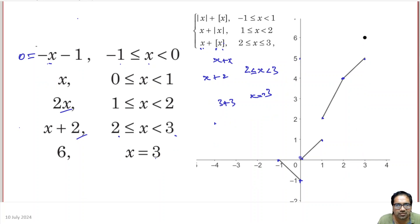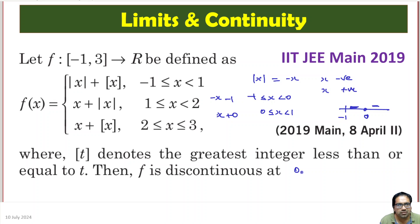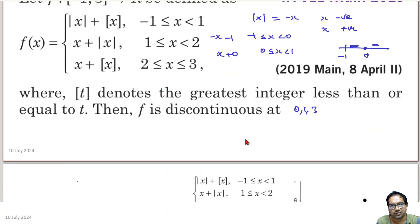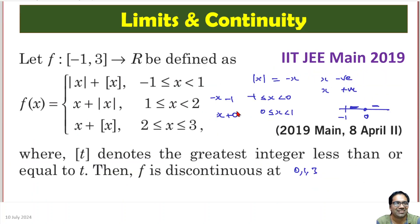Now we can see clearly where the discontinuities are. At x = 0, there is clearly a discontinuity. At x = 1, there is also a discontinuity. At x = 3, there is a discontinuity too. At x = 2, it is NOT discontinuous because the left side and right side both approach 4. So f is discontinuous at 0, 1, and 3. Simple problem — we just need to apply the basic rules of absolute value function and greatest integer function, and see where the function is discontinuous. Drawing a graph actually helps. Hope you like this. Thank you.